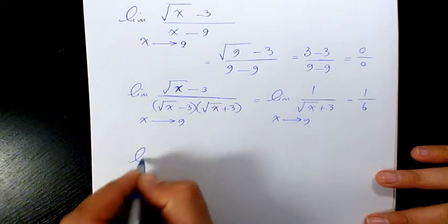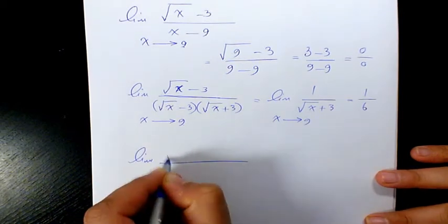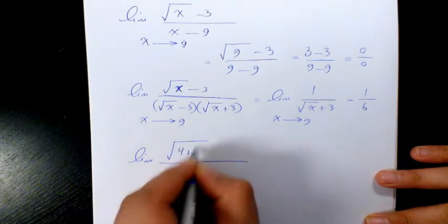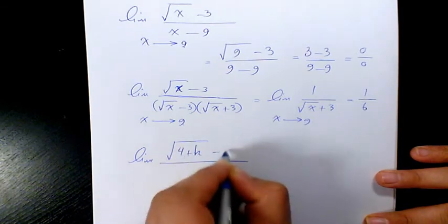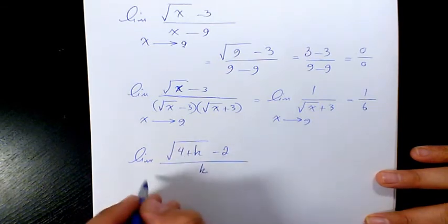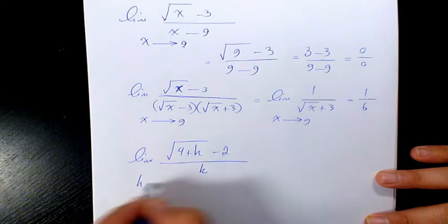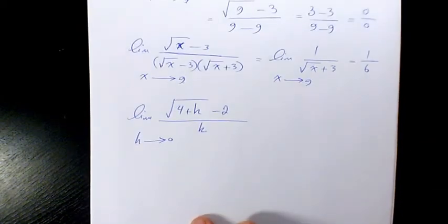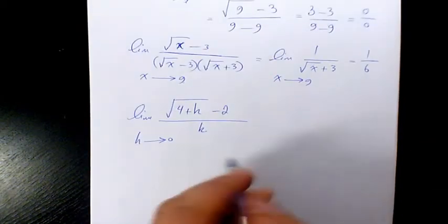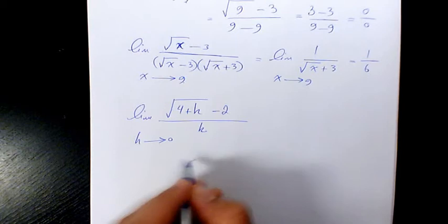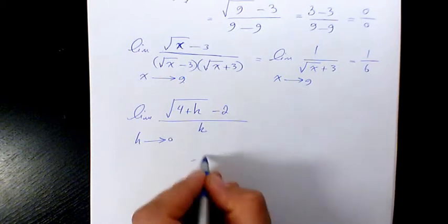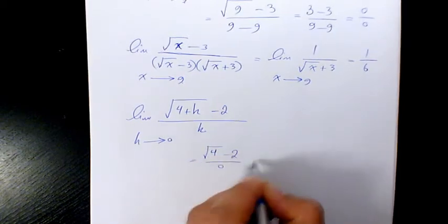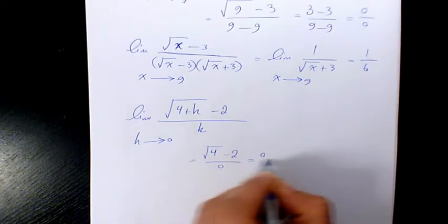Next example: the limit of (square root of 4 plus h minus 2) over h as h approaches 0. When you substitute, it's going to be (root 4 minus 2) over 0, which gives 0 over 0.